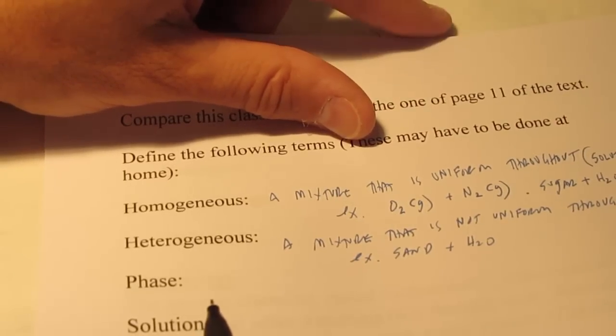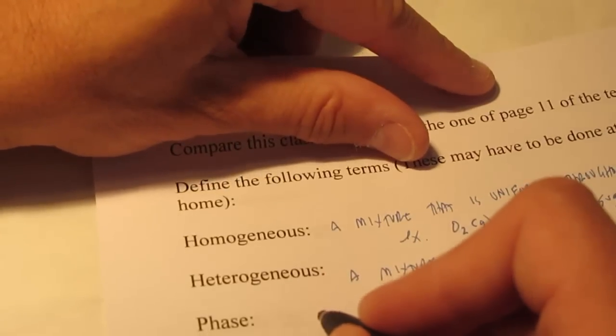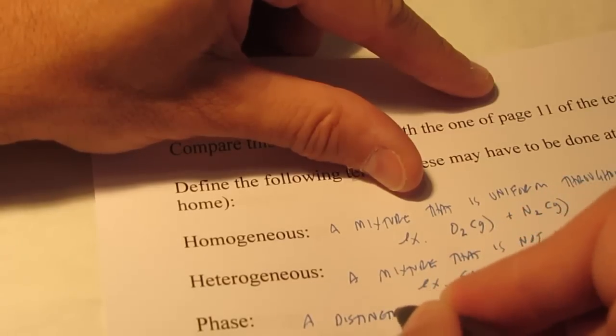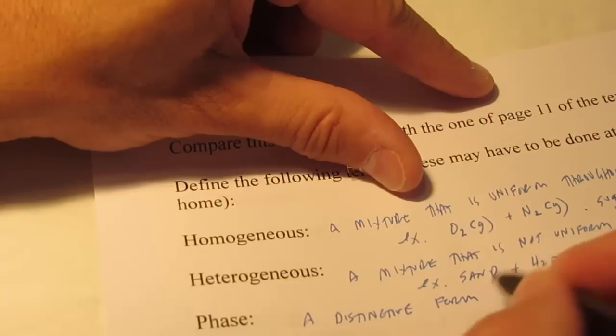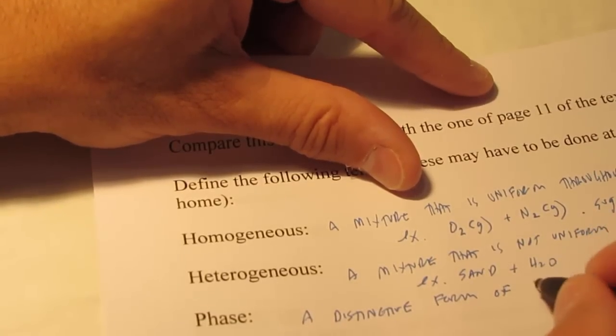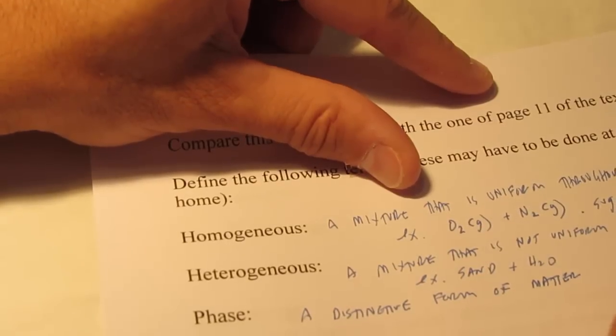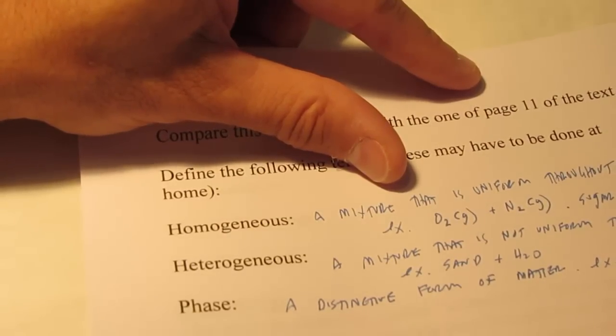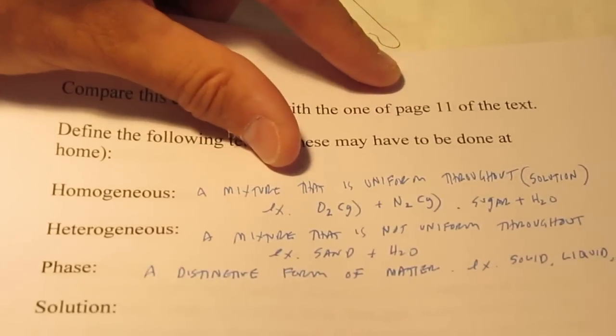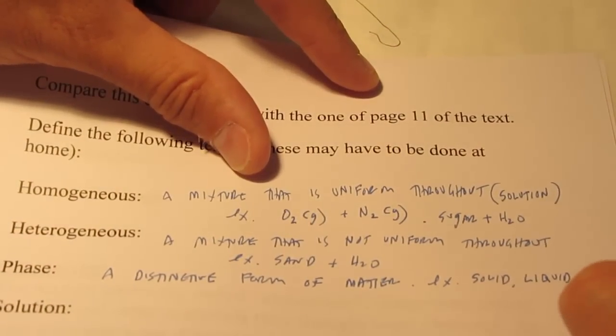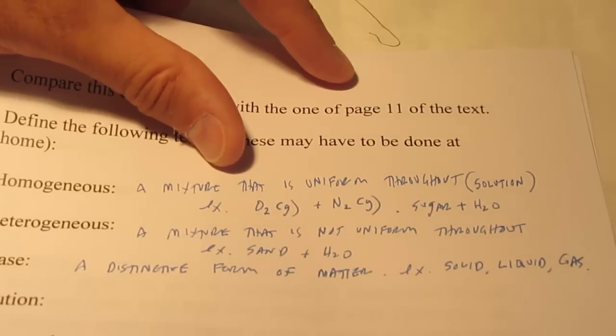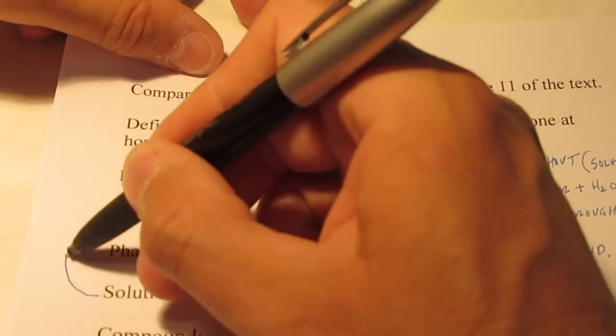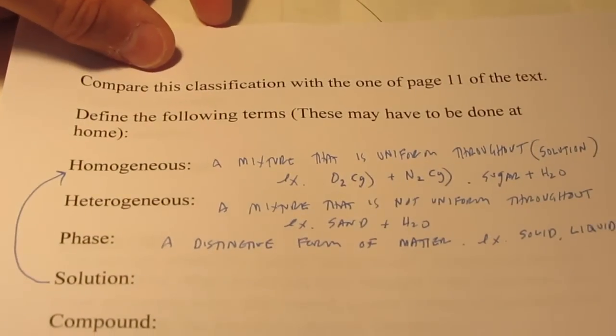And that brings us to the term, phase. A phase is simply a distinctive form of matter. Now, in chemistry, we usually talk about three phases of matter. You've heard of them all. They would be solid, liquid, and gas. All right, now a solution we've already defined. A solution is just another word for homogeneous mixture.